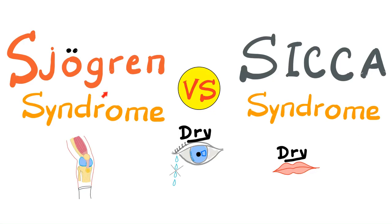It's Medicosis Perfectionals, where medicine makes perfect sense. We continue our rheumatology playlist, and today we'll compare between Sjögren syndrome and Sicca syndrome. Are they different? Are they the same? If they're not the same, are there any common features between them? This is what we will discover today, so let's get started.